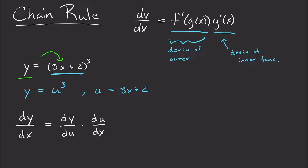Writing it this way, if we want dy/dx, the du's cancel and we're left with dy/dx. So dy/dx equals dy/du times du/dx — the derivative of the outer function times the derivative of the inner function. We just need to go find those individual derivatives.